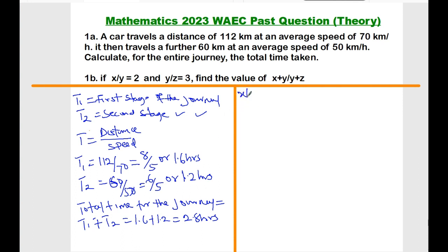Then question B, it is given that x over y equals 2, and then y over z equals 3, and we have to find the expression x plus y divided by y plus z. So let's express x in terms of y.